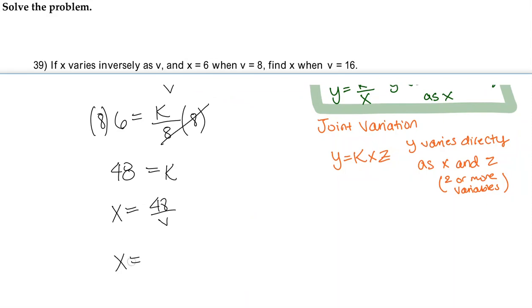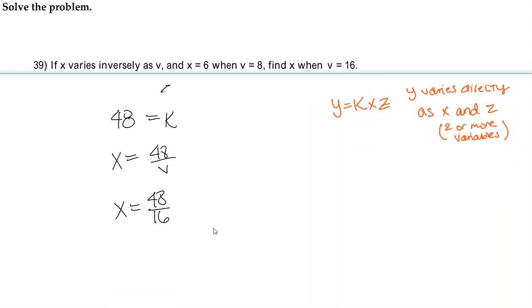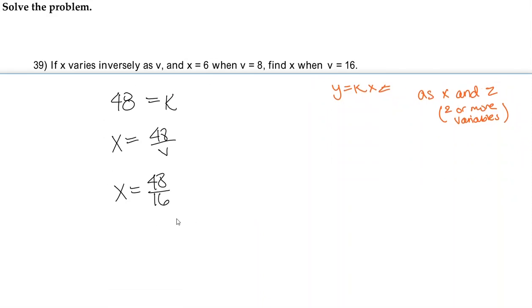So we'll just go ahead and plug in 16 for v, and remember k is constantly 48, so x is 48 over 16 which is 3 when it's simplified. So our answer is x equals 3.